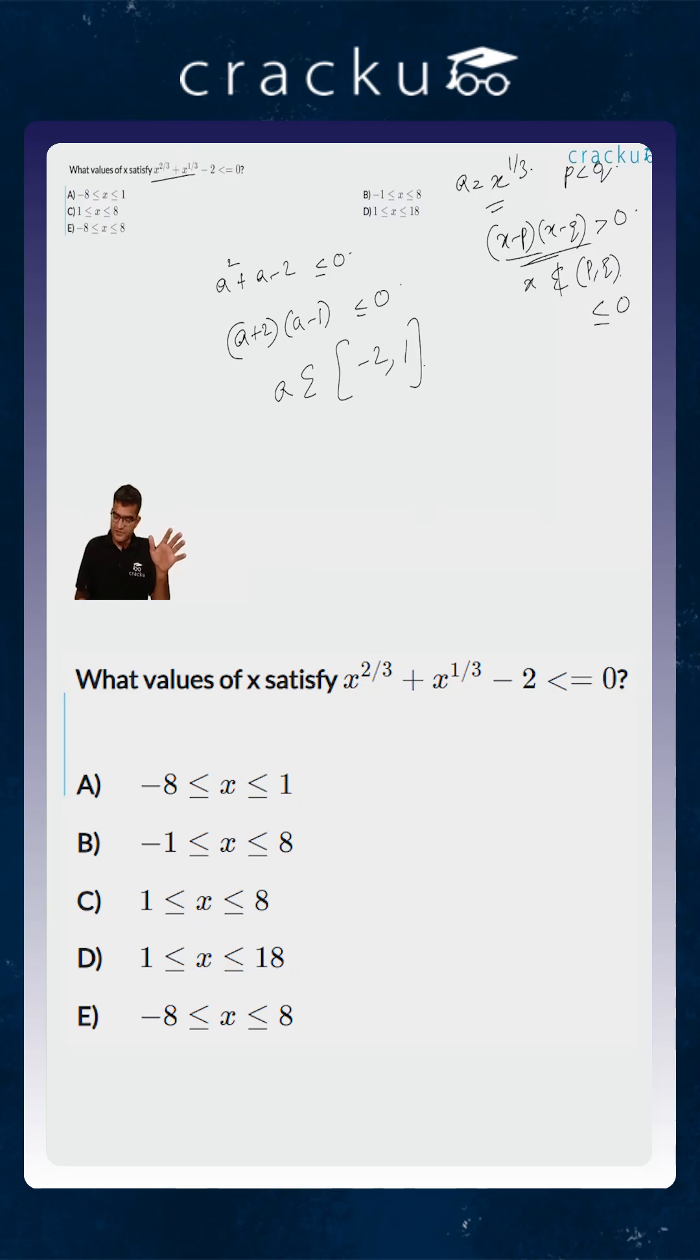However, if it is less than or equal to 0, then it would imply that x definitely lies between p and q. In this particular case, it is less than or equal to, so a belongs to [-2, 1].